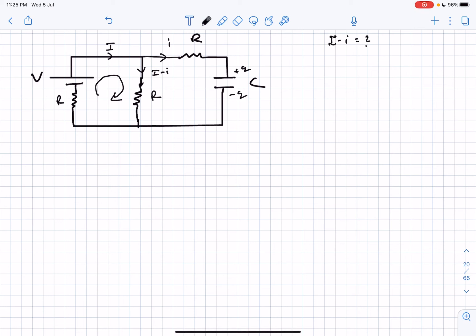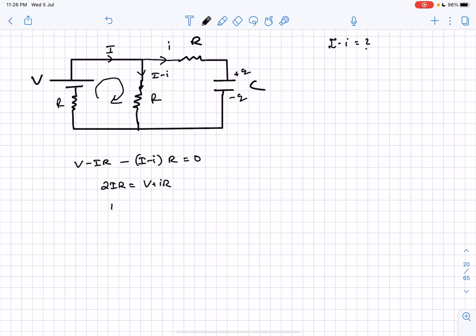The equation will be V minus iR minus (capital I minus small i) multiplied by R equals 0. From here we'll get the value of capital I as V plus iR divided by 2R.